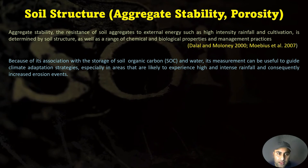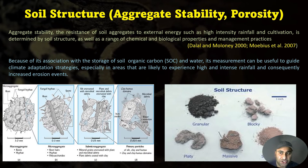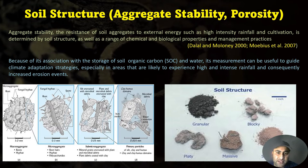Soil aggregate stability is the resistance of soil aggregates to external energy such as high-intensity rainfall and cultivation. It is determined by soil structure as well as a range of chemical and biological properties and management practices. Because of its association with storage of soil organic material and water, measuring aggregate stability can be useful to guide climate adaptation strategies, especially in areas likely to experience higher-intensity rainfall and consequently increased erosion events.